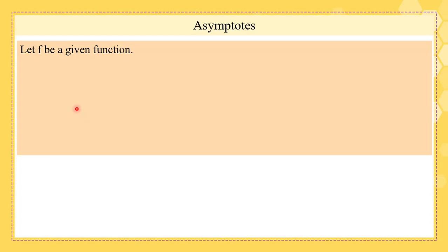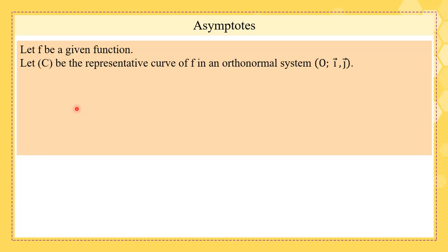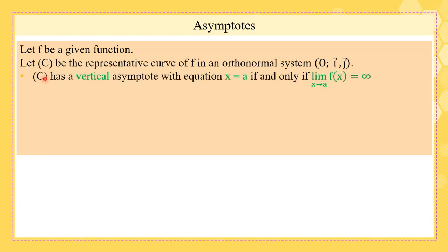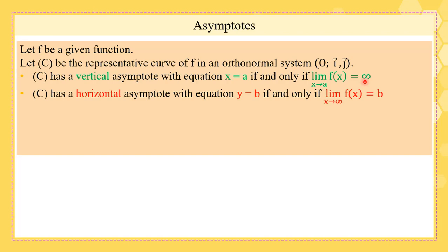f is a given function and C is the representative curve of f in an orthonormal system. C is going to have a vertical asymptote if and only if the limit of f(x) as x tends to a is infinity. C will have a horizontal asymptote whose equation is y equals b if and only if the limit of f(x) as x tends to infinity is b.